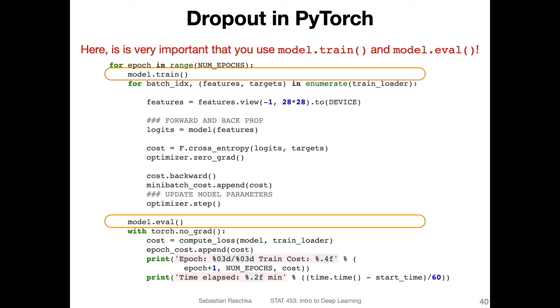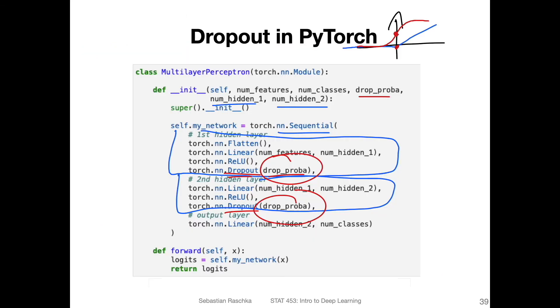One more modification you have to make in the code is you have to make sure that you use model.train and model.eval when you do the model training and the testing. I mentioned this earlier when we talked about PyTorch that this is important. I always do that no matter whether I have dropout or not, just to make sure that there's no unwanted side effect or unwanted behavior.